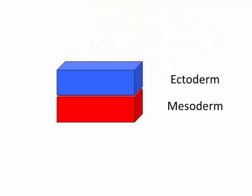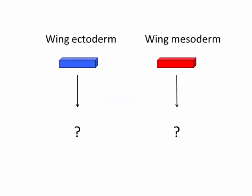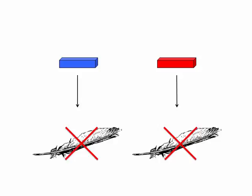You all know that the skin is composed of two layers: an inner dermis derived from mesoderm, and an outer layer, the epidermis, that is derived from ectoderm. In the first experiments we'll discuss, embryologists took mesoderm and ectoderm from the wing and grew them without each other. No feather forms.